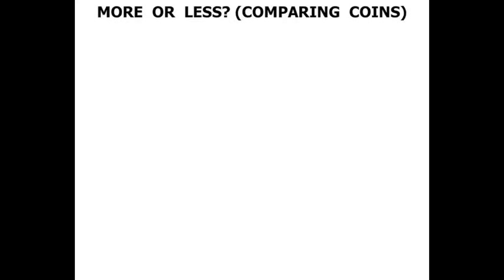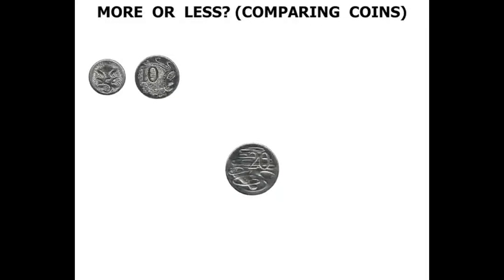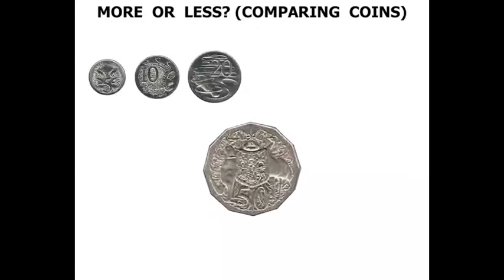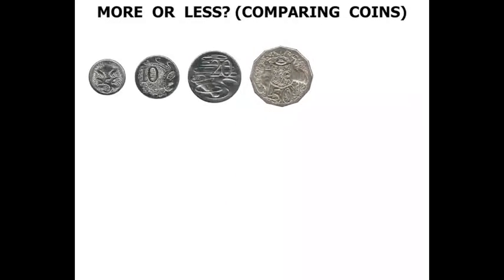More or Less Comparing Coins. This first one is a 5 cent coin. This one is a 10 cent coin. This one is a 20 cent coin. This one is a 50 cent coin.